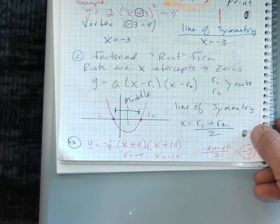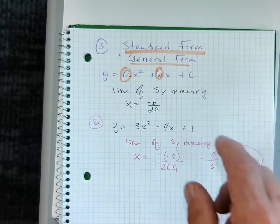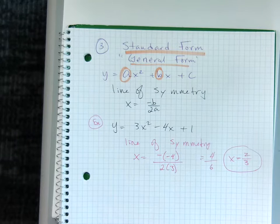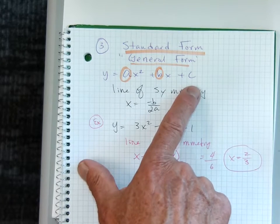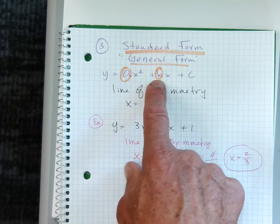Then our third form is called the standard form or general form. This book likes general form. I like standard form. So most of our quadratics come in the general form, ax squared plus bx plus c.